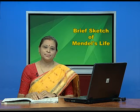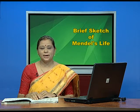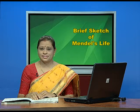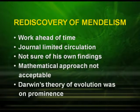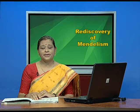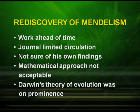Unfortunately, he was not appreciated by his contemporary biologists. The reasons include: his work was ahead of time, journals had limited circulation, he was not sure of his own findings, and importantly, the mathematical approach was not acceptable to biologists then. Also, Darwin's theory of evolution was prominent at the time.